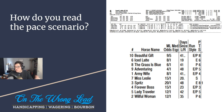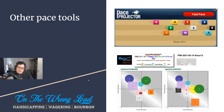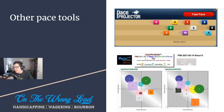We call these extreme pace scenarios or things to look out for. I think we have other videos where we talk about finding lone speed or how to view different pace scenarios. Now, I also use Timeform quite heavily — they have a pace projector. As you can see here, these are both from the same Black-Eyed Susan race we saw in the Brisnet summary. It's telling you there's a lot of speed — fast pace. Maybe you want to look at horses coming a little off the pace.